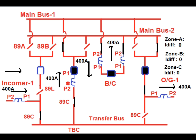Apart from zone A and zone B, there is another zone — zone C. Zone C will be activated if 89C of the TBC is closed. In this case, since incomer 1 is diverted to the TBC bay, zone C — which is the protection zone for the TBC bay — will be activated. This zone includes the TBC CT and any of the incoming or outgoing feeders connected through it.